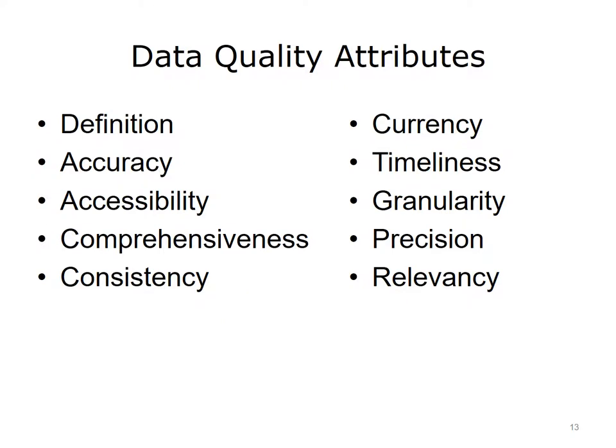Data quality is a complex topic, and it is affected by more than just the accuracy of data. A review of the literature yields a number of terms that can be used to describe data quality attributes. The DQM model attributes include: definition, accuracy, accessibility, comprehensiveness, consistency, currency, timeliness, granularity, precision, and relevancy. Each of these attributes will be described and an example will be provided, as well as key process issues that HIT professionals should consider for effective health information exchange.